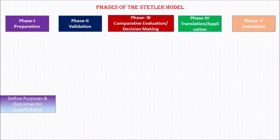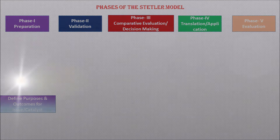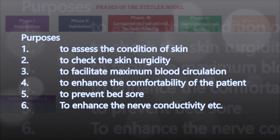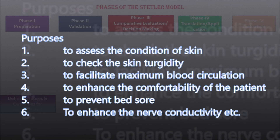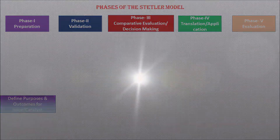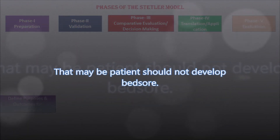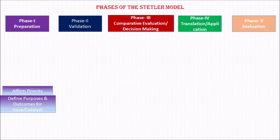For example, suppose you want to perform a back care procedure for a bedridden patient. You need to list the main purposes of back care: to assess the condition of the skin, check skin turgidity, facilitate maximum blood circulation, enhance patient comfortability, prevent bed sore, and enhance nerve conductivity. After listing the purposes, you define your expectations — for example, that the patient should not develop a bed sore. After listing your expectations, affirm the priority, meaning to what extent the procedure is necessary.